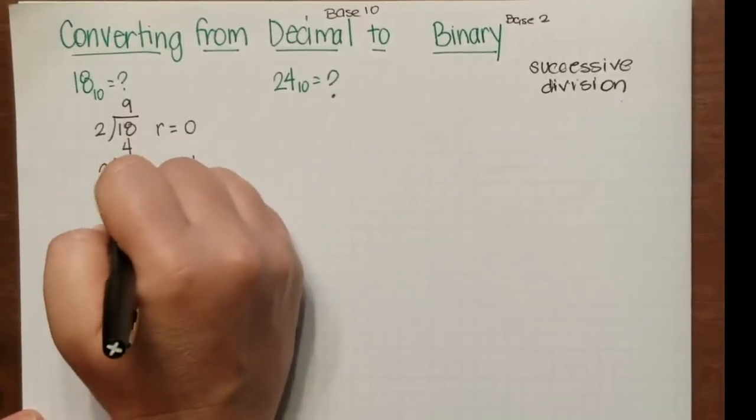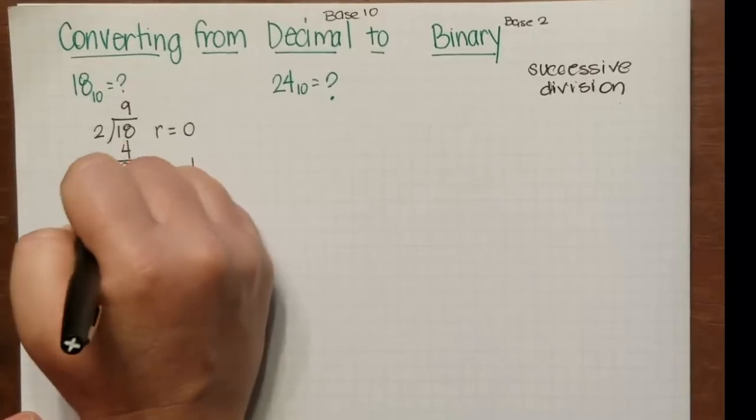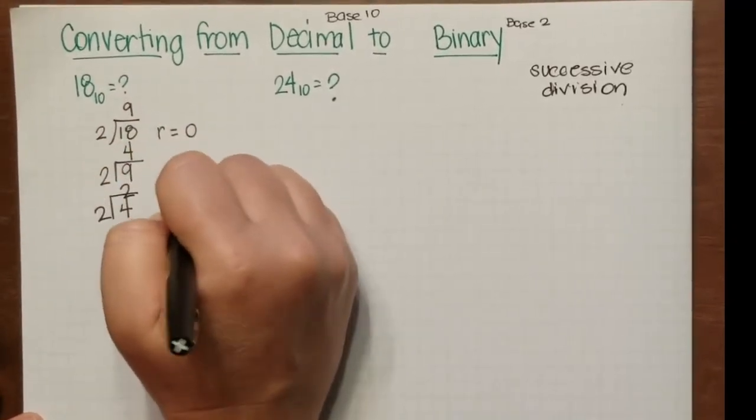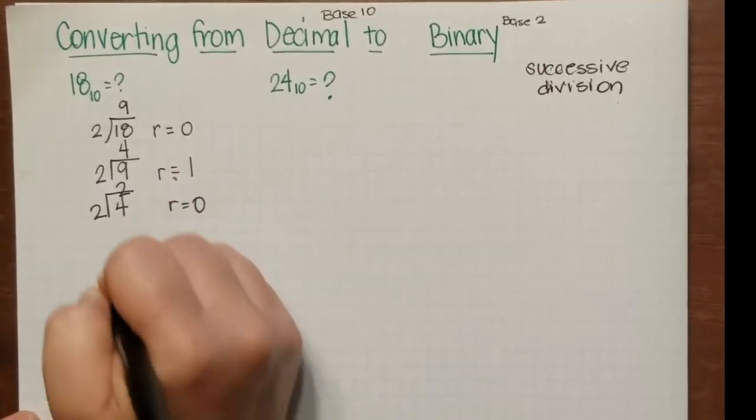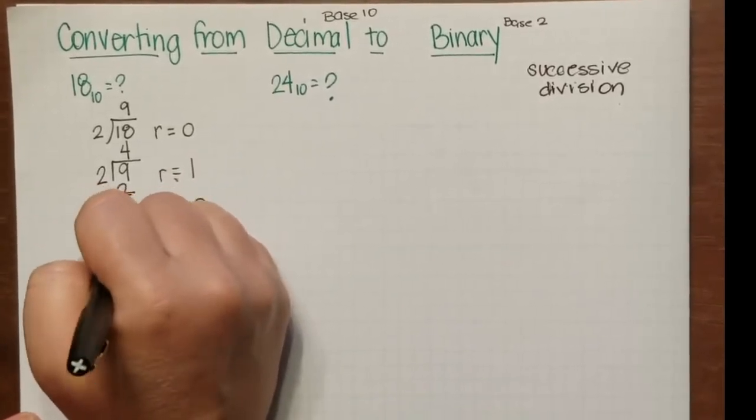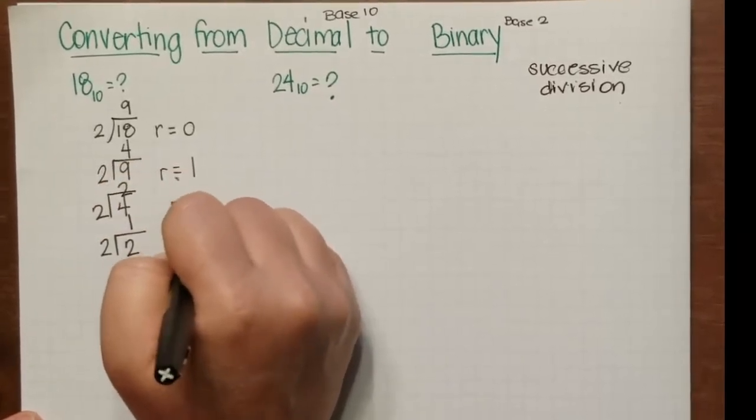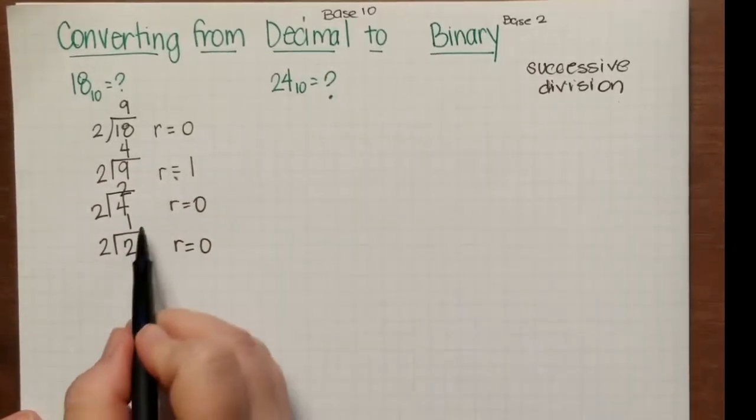Now we're going to do 4 divided by 2. Take the 4 from there and leave it in, so that's 2 with the remainder of 0. And we do 2 goes into 2 one time with the remainder of 0.